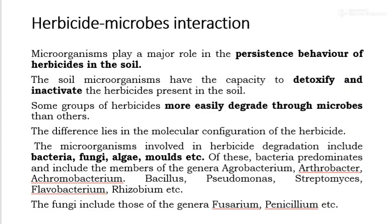Regarding the interaction of herbicides and microbes: microorganisms play an important role in the persistence and behavior of herbicides in soil. Soil microorganisms have the capacity to detoxify and inactivate herbicides present in the soil, though some herbicide groups degrade more easily through microbial action than others, with the difference lying in their molecular configuration. Microorganisms involved in herbicide degradation include bacteria, fungi, algae, and molds. Among bacteria, the predominant genera include Agrobacterium, Arthrobacter, Agromyces, Bacillus, Pseudomonas, Streptomyces, Flavobacterium, and Rhizobium. Among fungi, Fusarium and Penicillium are involved. Thus, microbes are responsible for the degradation of herbicides.